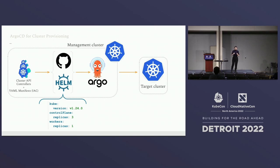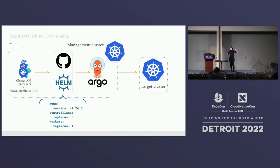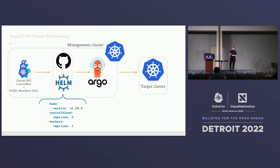We store YAML manifests in GitHub. With GitHub, we can use ArgoCD or a GitOps tool — in this case I've chosen to install ArgoCD on the management cluster. Now any changes we introduce to our Git repository, any new commits, are going to be identified by Argo and applied to the target cluster straight away.